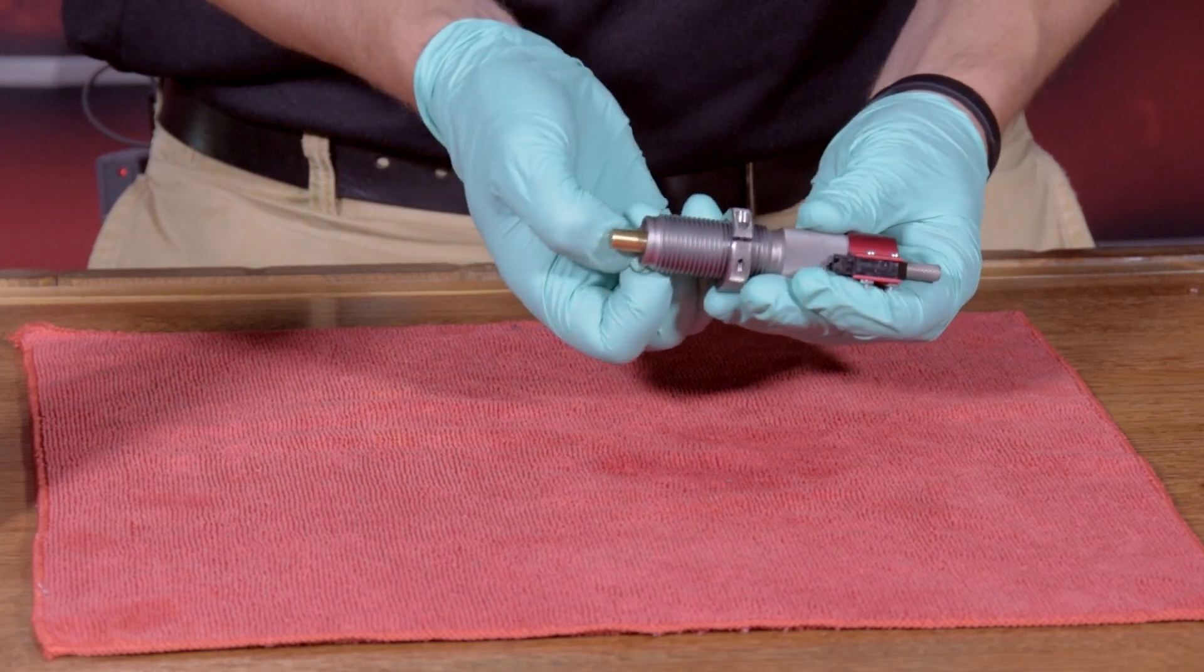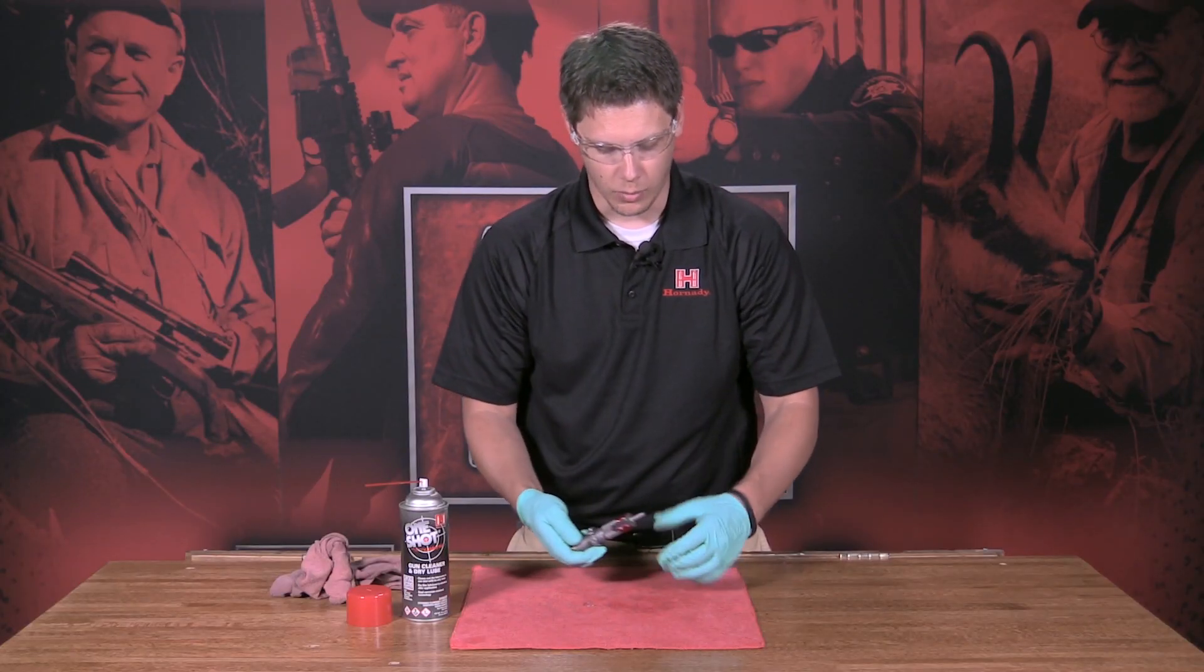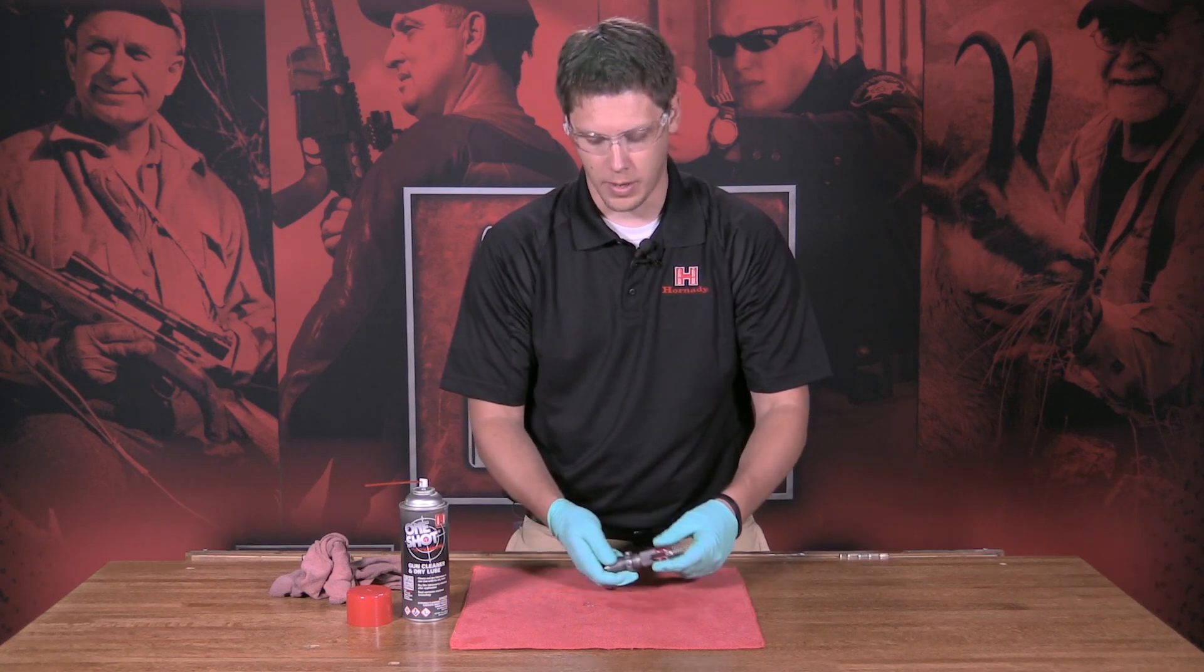To disassemble it, there's a lock ring on the bottom. When you're sliding it out, you're going to want to put down a towel or something to catch the ball bearings.